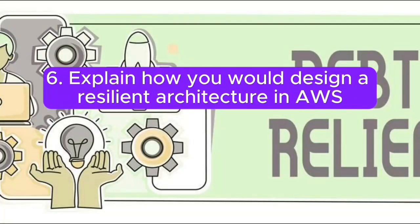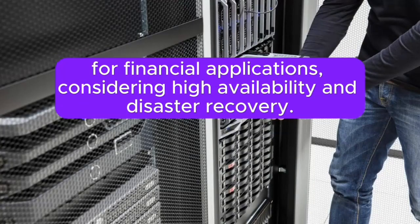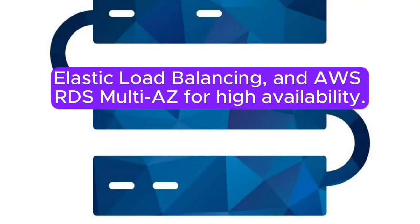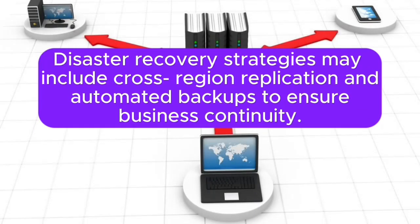Question 6: How do you design a resilient architecture in AWS for financial applications, considering high availability and disaster recovery? Answer: Designing a resilient architecture involves leveraging AWS services like multi-AZ deployments, Elastic Load Balancing, and AWS RDS multi-AZ for high availability. Disaster recovery strategies may include cross-region replication and automated backups to ensure business continuity.